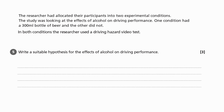This is question five in the research methods topic. The question says: write a suitable hypothesis for the effects of alcohol on driving performance, for three marks. This hypothesis question relates to a scenario written earlier in the questions, and then you get lots of sets of questions attached to that scenario. To answer this question, we need to look at what the scenario was.